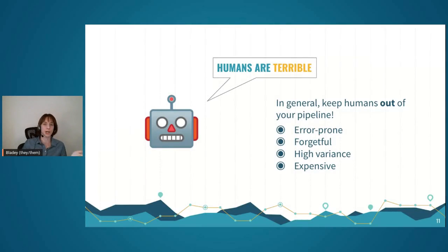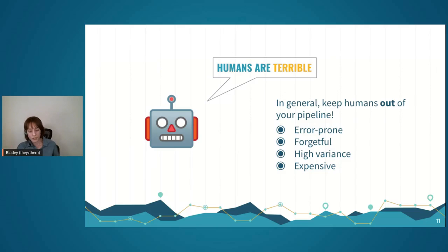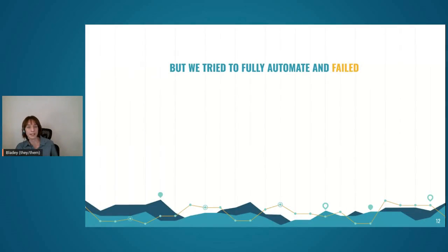Now I'm going to get into how we approached this problem. I want to start with a caveat: I am generally not a fan of humans in my pipelines. They make tons of mistakes, their work output is highly variable, they're very expensive — not my go-to. But when we tried to fully automate this reporting pipeline, we were unsuccessful. I'm going to show a couple specific examples about why.